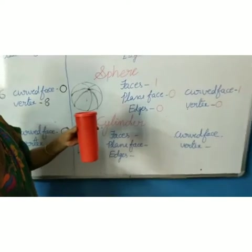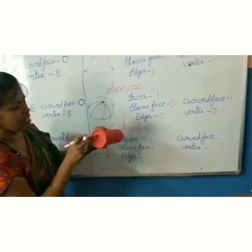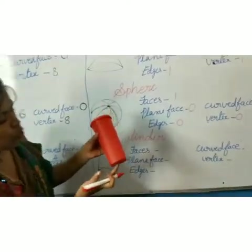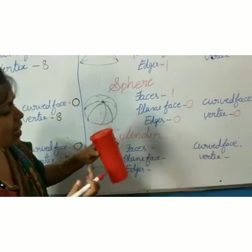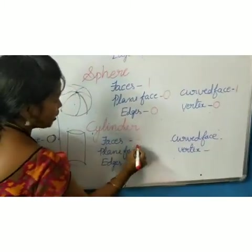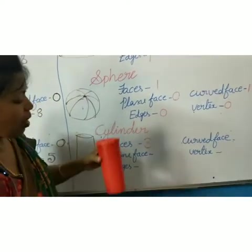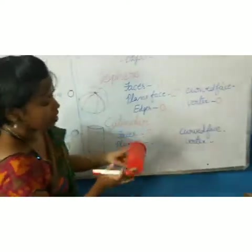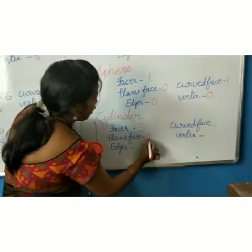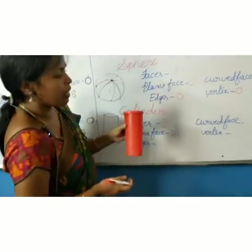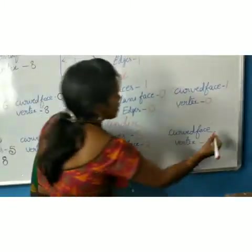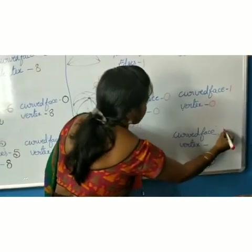How many faces it has? Three faces. This is one flat face and one more — two faces — and another one is curved face. How many faces? Three. Two are the plain faces. One, two — these are the two plain faces. And how many curved faces? This is curved face. One.